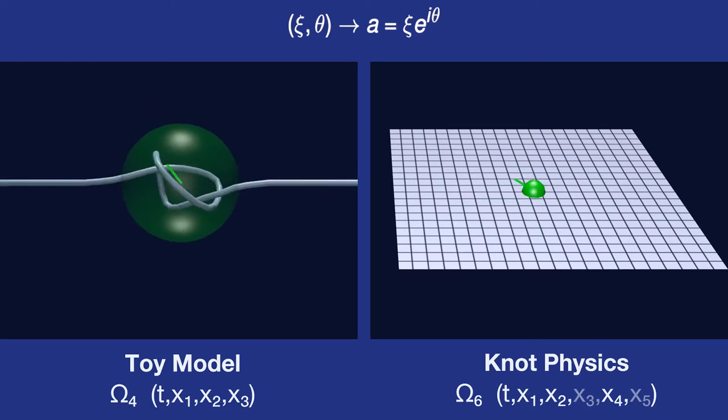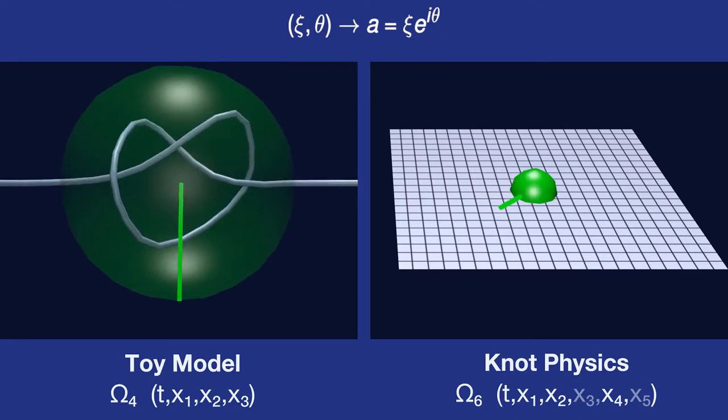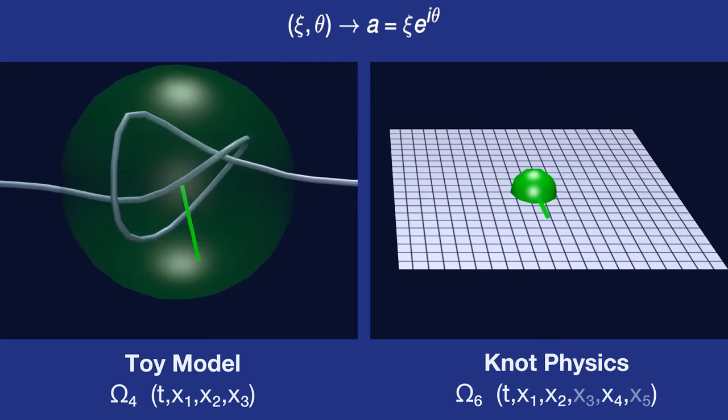This is shown most clearly in the toy model on the left, where we have a knot in the manifold and that knot is rotating and changing size. We've added on a few extra visual cues to make it clearer what's happening.